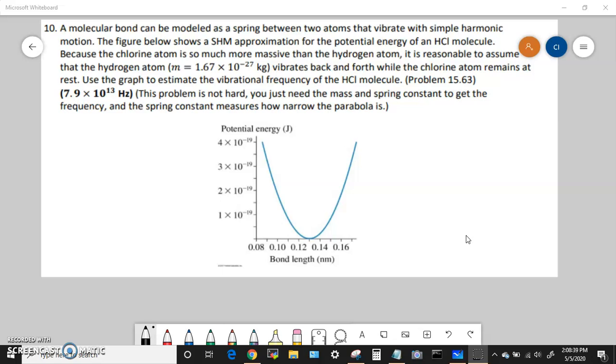All right, so now we're doing another problem from chapter 11. This one says a molecular bond can be modeled as a spring between two atoms that vibrate with simple harmonic motion. The figure below shows a simple harmonic motion approximation for the potential energy of a hydrogen chloride molecule. Because the chlorine atom is so much more massive than the hydrogen atom, it is reasonable to assume that the hydrogen atom, mass 1.67×10^-27 kilograms, vibrates back and forth while the chlorine atom remains at rest. Use the graph to estimate the vibrational frequency of the HCl molecule.